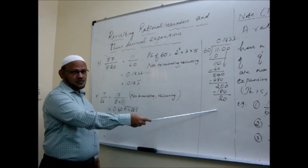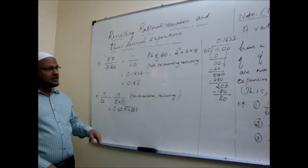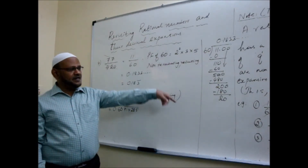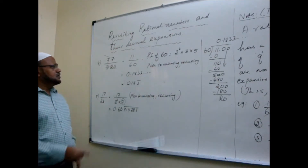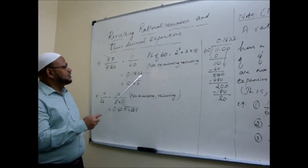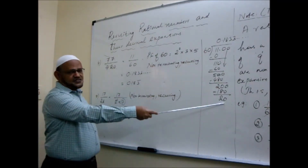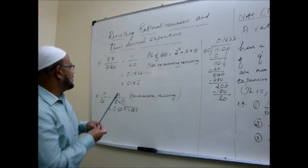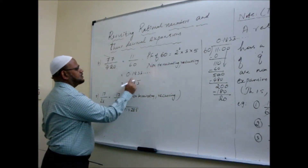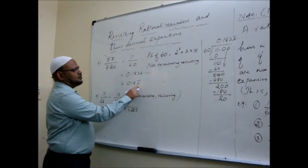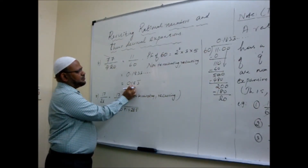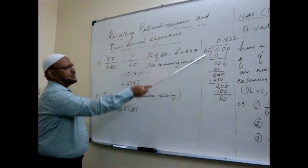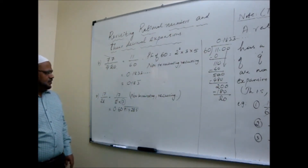I have just divided and shown, but you will not be asked to divide and show. You will be asked: will it terminate or will it recur? Without performing division, you have to determine. We get 3 coming extra, so when I divide and cross-check I get 0.1833... going on — 0.183 bar. Only 3 is repeating. So it is non-terminating recurring decimal. Checking the prime factor, we conclude what kind of decimal it will have.